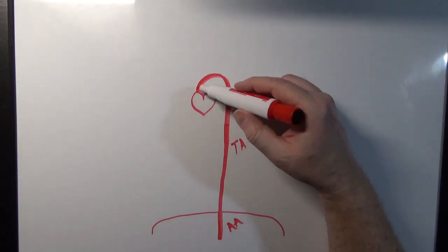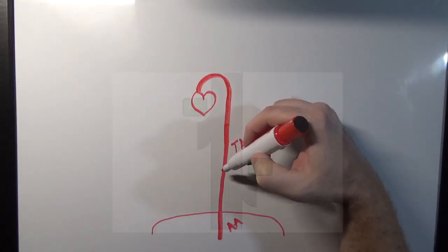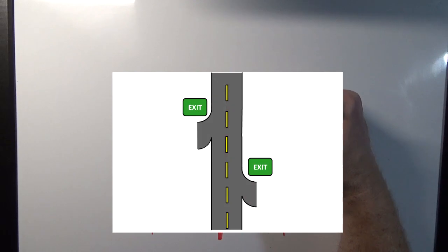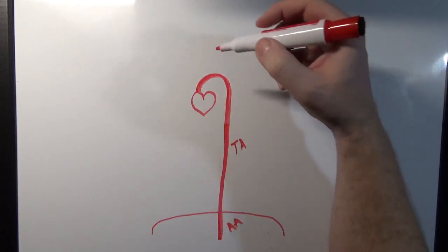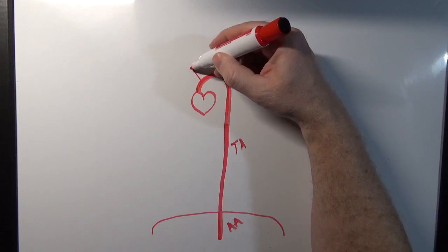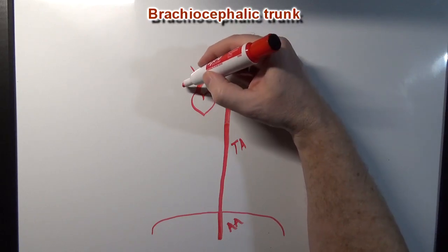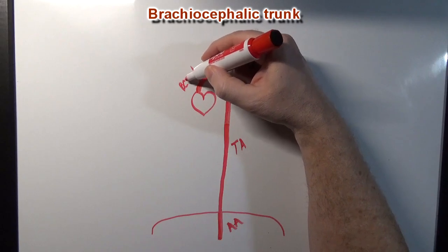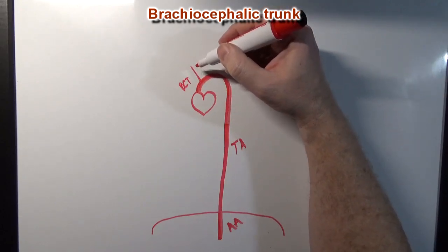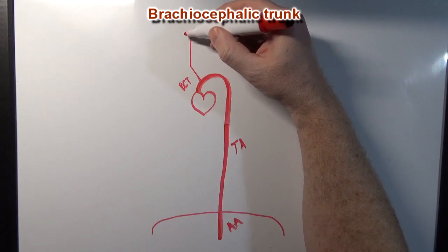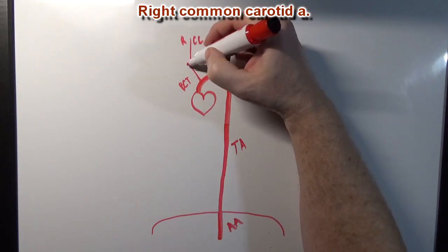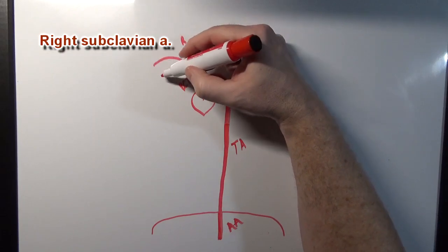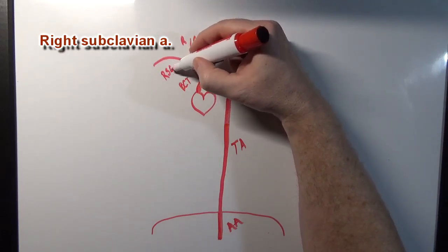We can think of this main blood vessel as being an interstate highway, and that interstate highway is going to have exits — this main blood vessel is going to have branches. The first branch I'm going to talk about is the brachiocephalic trunk. This brachiocephalic trunk is going to branch into a right common carotid and a right subclavian artery.